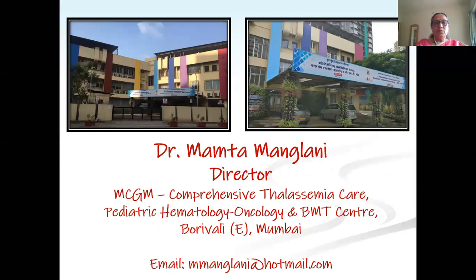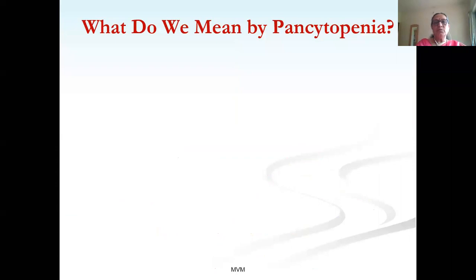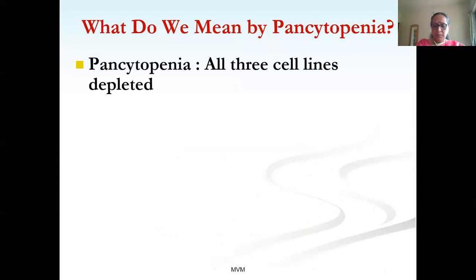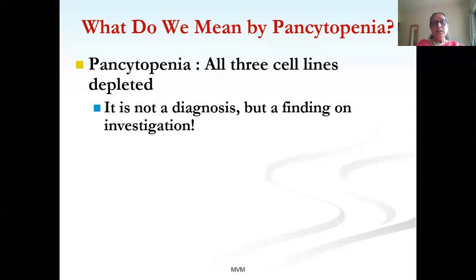When we say 'pan' it means all; cytopenia means reduction in cell lines. So when there is a decrease in all three cell lines it is called pancytopenia. We call it bicytopenia when two cell lines are reduced, and when a single cell line is reduced we address it as anemia, leukopenia, or thrombocytopenia. Pancytopenia is not a diagnosis — it is a finding on investigation.